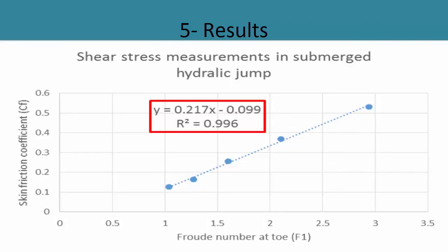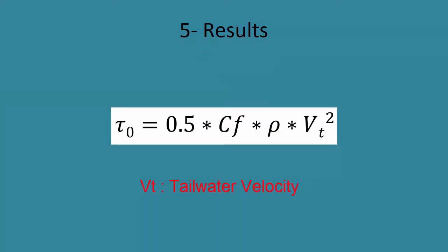For submerged hydraulic jump, we developed this chart. Now if we know Froude number for any submerged hydraulic jump on the flume, we can directly get shear stress. You enter with the value of Froude number and get skin friction coefficient, or you can use this equation directly. After that, use this equation to get shear stress.